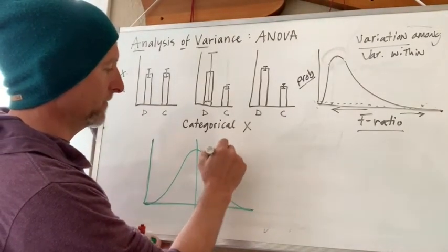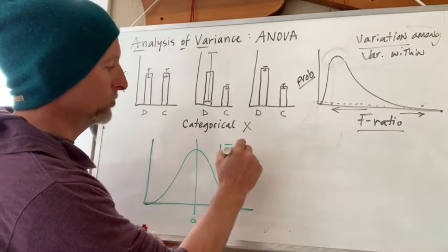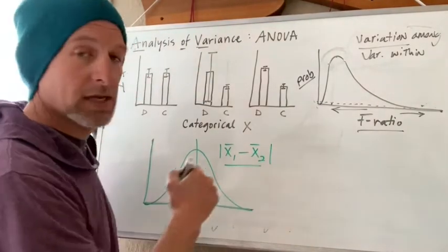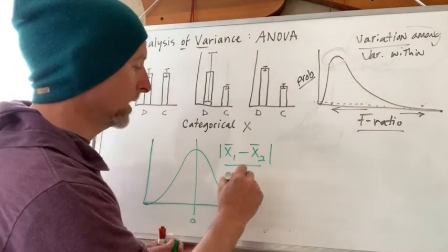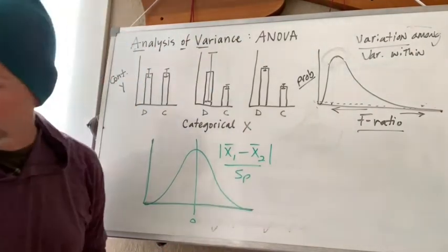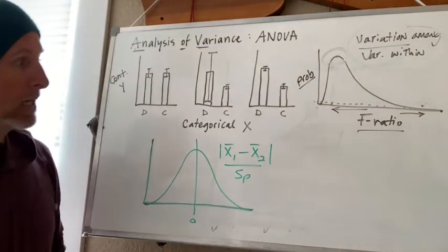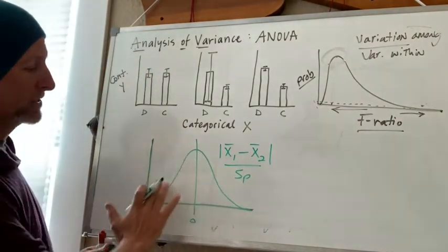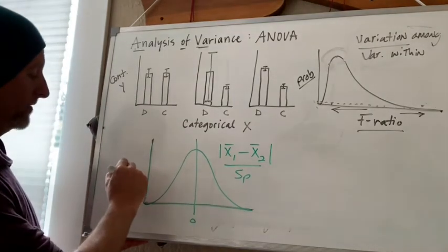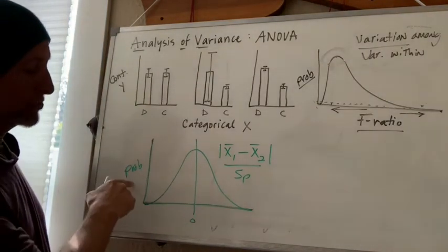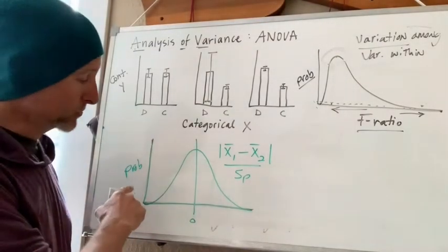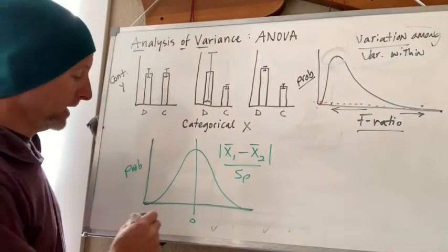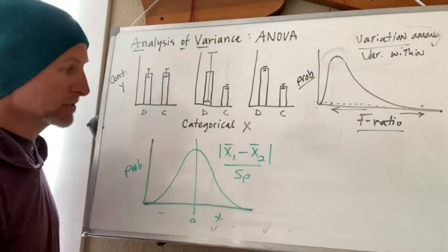In the case of a t-score, you're taking the values of two means maybe, for example in a paired t-test, and then you're dividing by some pooled measure of variation. In the case of that t-score, you have a distribution, but you still have probability on the y-axis, and then you get a score that could be either in the negative or in the positive range.